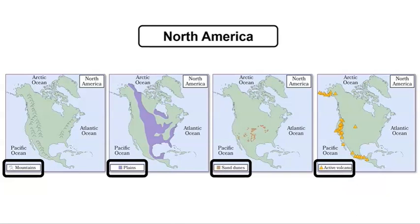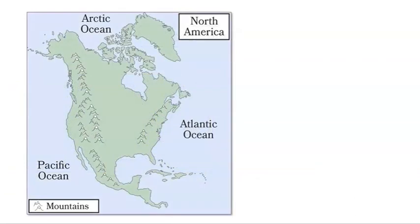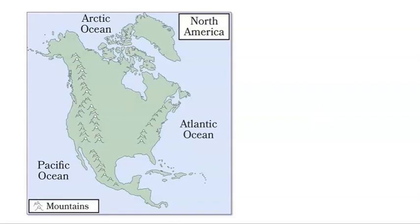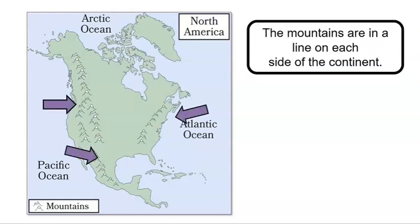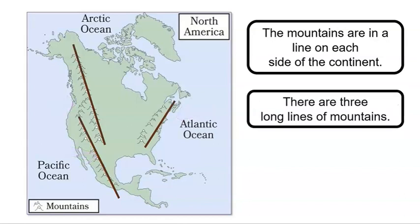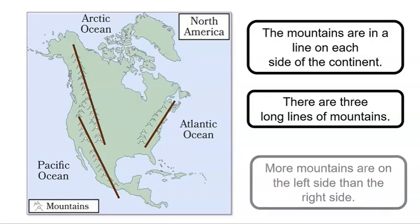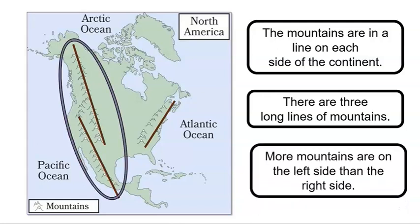Let's look closer at these maps, starting with mountains. Here is the symbol that shows mountains on the map. What do you notice? Where do you see mountains in North America? Can you point to them on the screen? I noticed that the mountains are in a line on each side of the continent, and there are three long lines of mountains. I also noticed that there are more mountains on the left side than on the right side of North America.